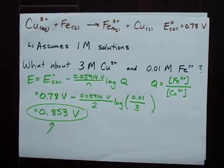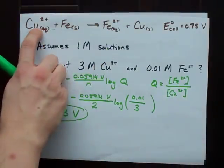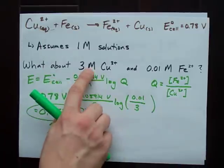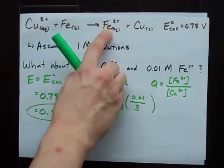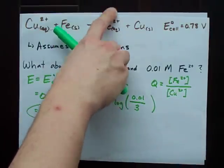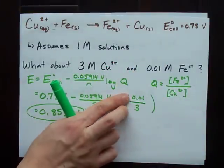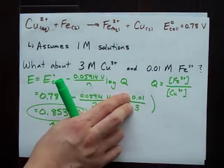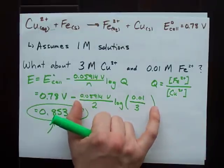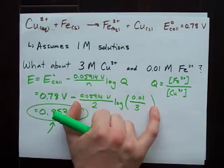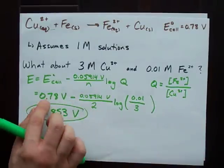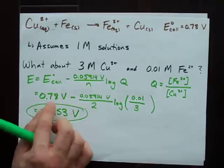What's important to note here is that as the reaction occurs, the copper concentration will go down, this iron concentration will go up, which will increase this value, which means I'm subtracting a bigger value each time, which means the cell potential will eventually reach about 0.78.